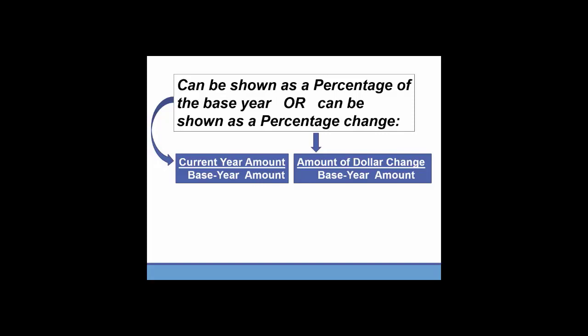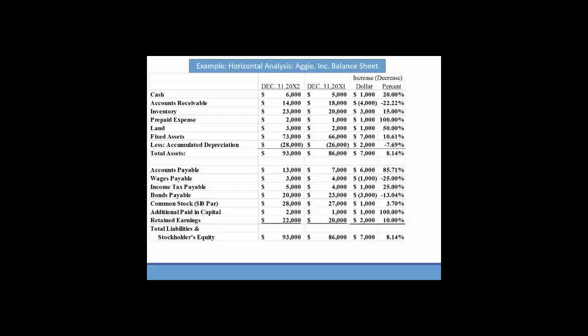Now let's look at Aggie. I've prepared the horizontal analysis for you in your lecture notes. Let's focus on cash. Cash in 20x1 was $5,000. In 20x2 it was $6,000, so there was a $1,000 increase. This translates to a 20% increase. This can be looked at as increase of $1,000 divided by the base year, the earliest year shown which is 20x1 or 5,000. So 1,000 divided by 5,000 is 20%.